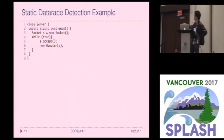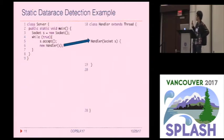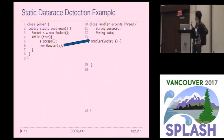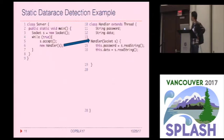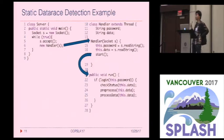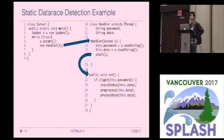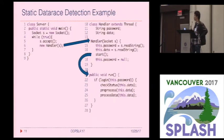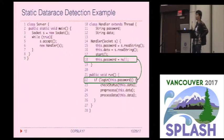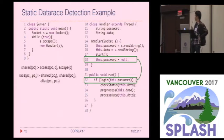The main function of the server class iteratively handles incoming requests by creating a handler object. The handler object only has two fields: a password field and a data field. The constructor fills these two fields with information derived from the socket. Then it starts a new thread to process the connection. The run method first checks whether the password matches the stored password. If yes, it proceeds to process the actual data. Because the password field is sensitive information, the main thread sets the field to null at line 918. So this program has a harmful data race between lines 918 and 922 on the password field, between the main thread and the new thread.